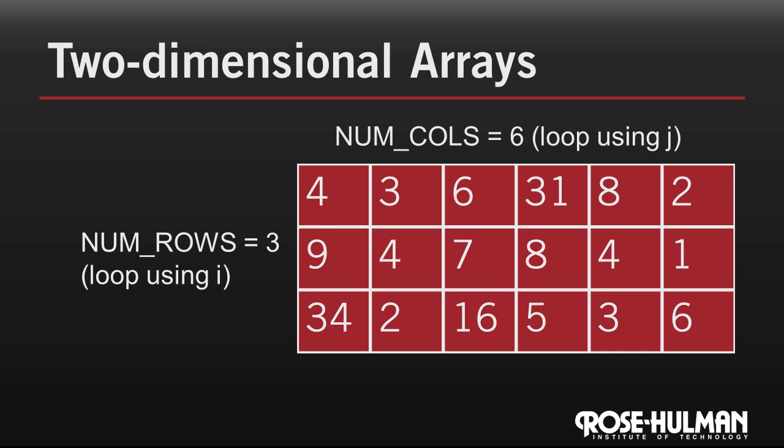To process an entire 2D array, we use a nested loop. The outer loop is over the rows, and the inner loop is over the columns.